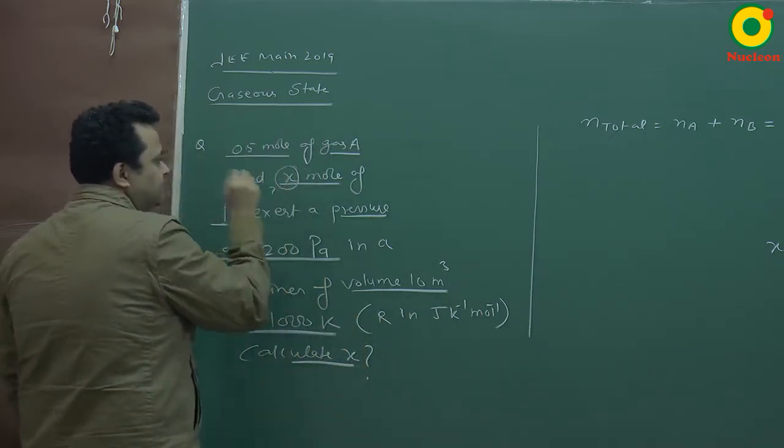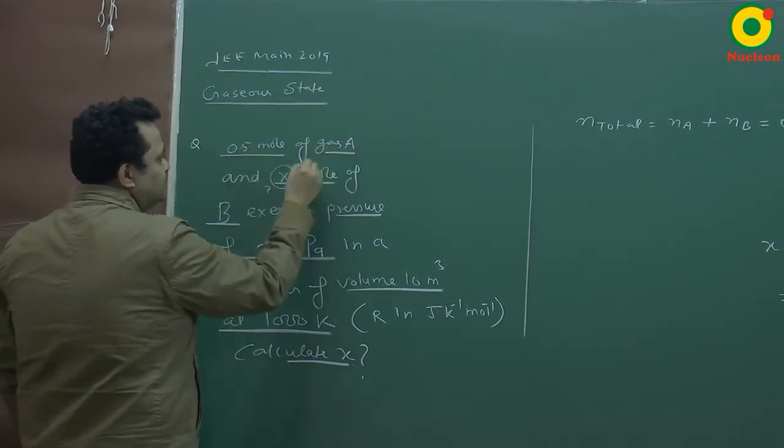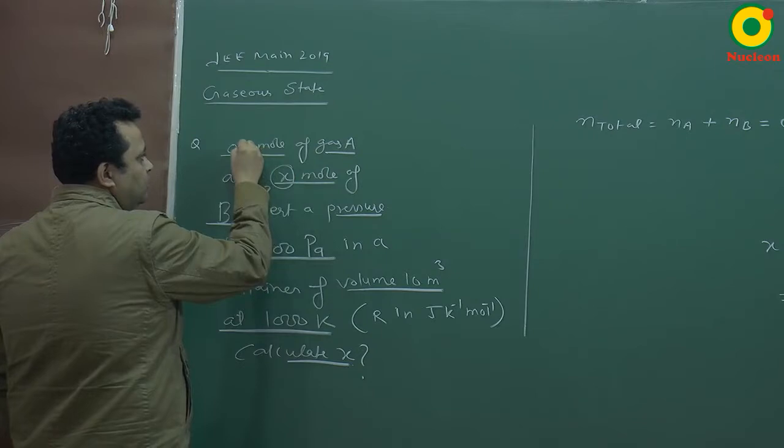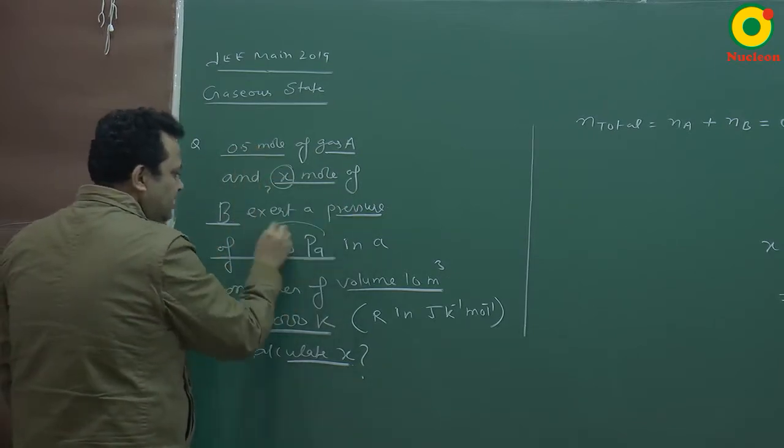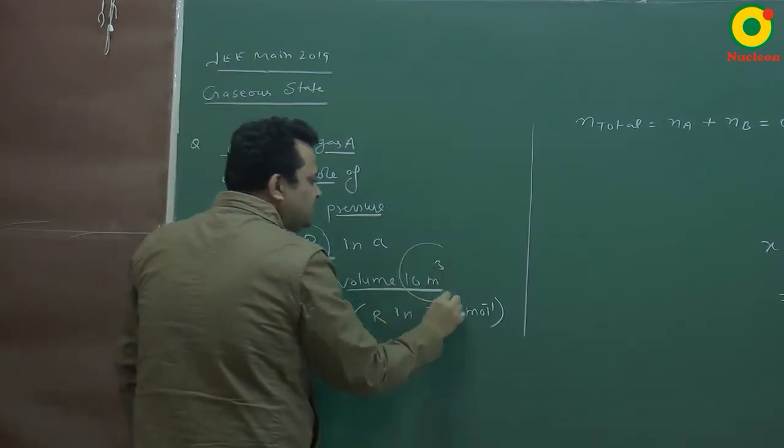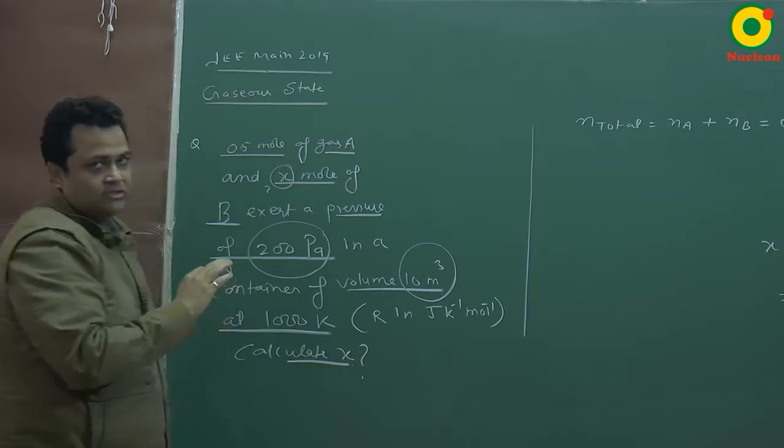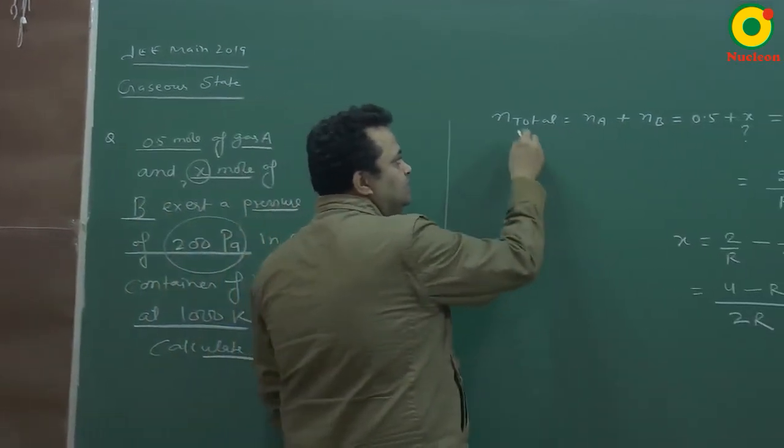The key for this problem is knowing that for these gases, the total moles are 0.5 plus x. This is the total pressure, this is the volume. We use PV equals NRT. The question is very simple - we add the total moles, which is the sum Na plus Nb.